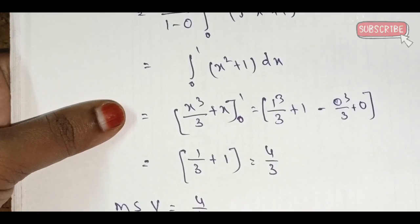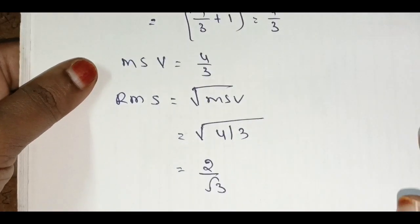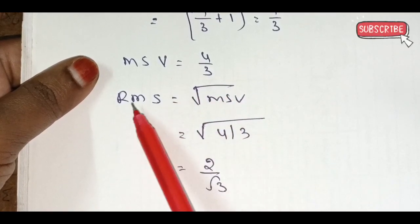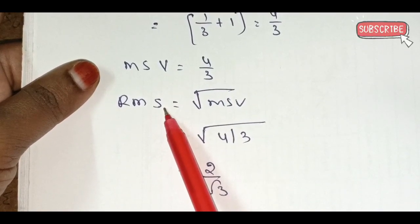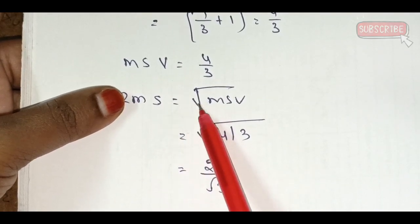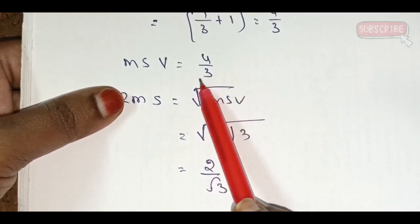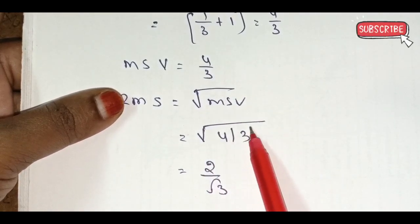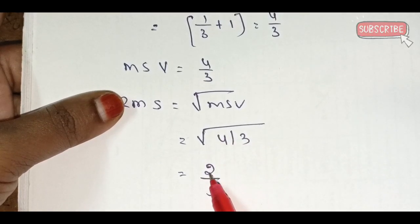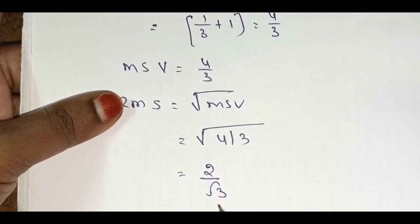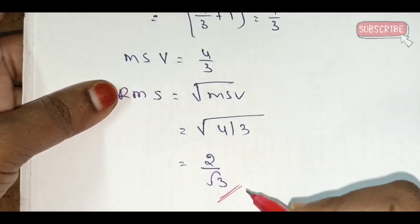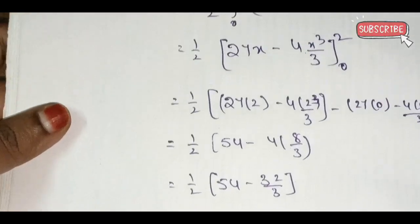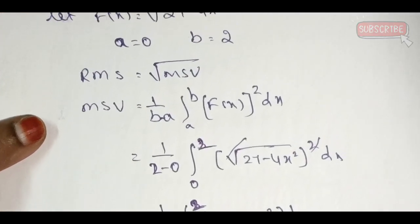So MSV equals 4/3. To find the RMS value, the formula is root over MSV. Therefore RMS = √(4/3).